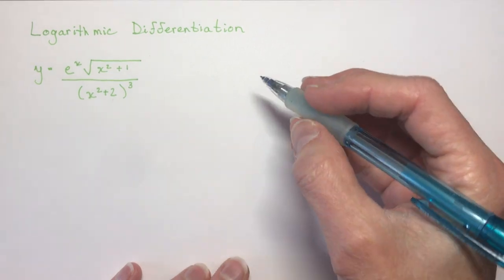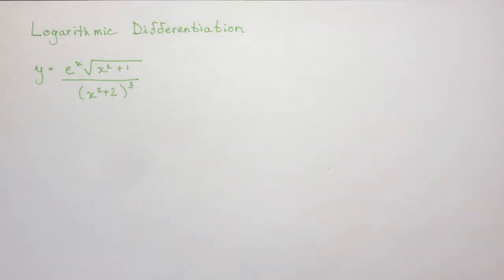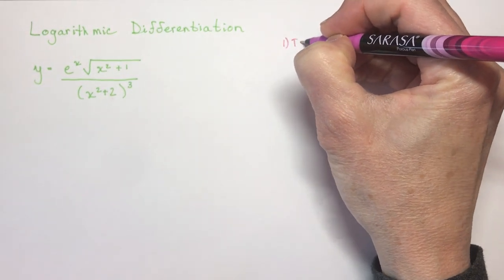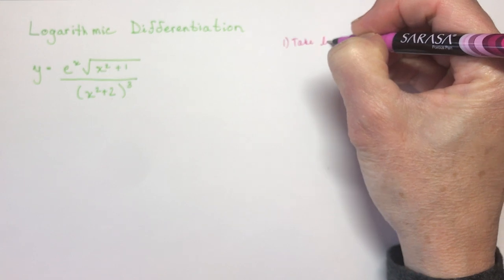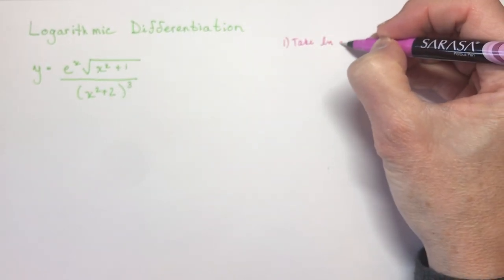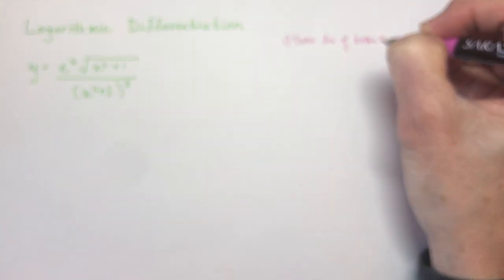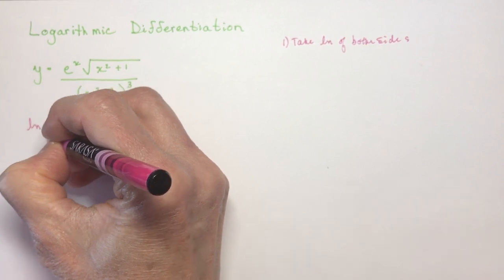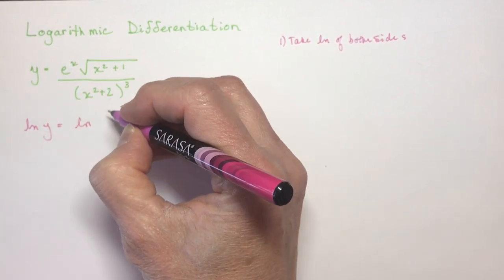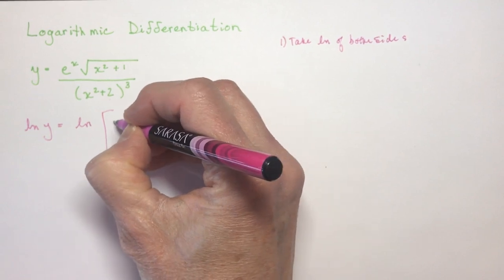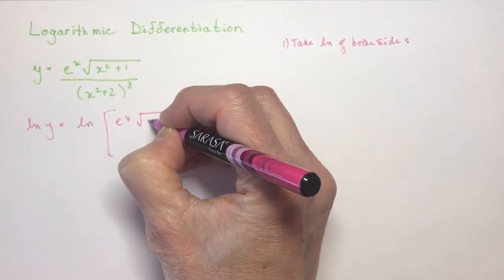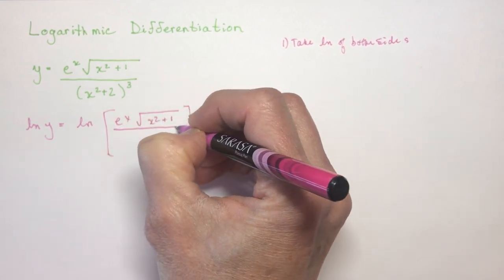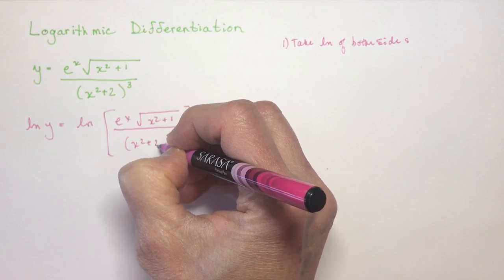So the first thing you want to do is we're going to take the log of both sides of the equation. So first, take the ln, it's going to be the natural log, ln of both sides. So what's that going to do for us? We're going to have ln y equals the ln of all of this stuff. So e to the x square root x squared plus 1 all over x squared plus 2 in brackets cubed.